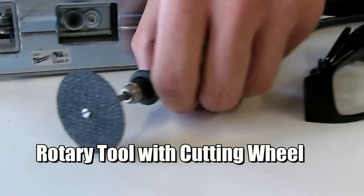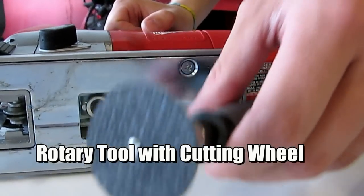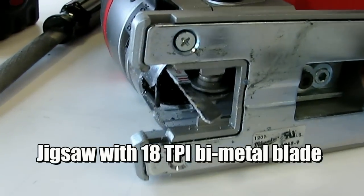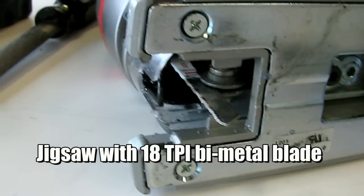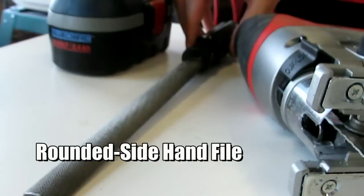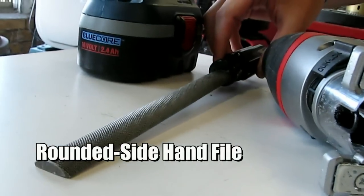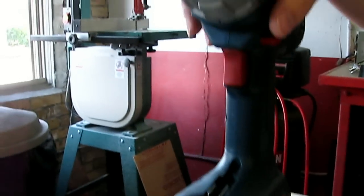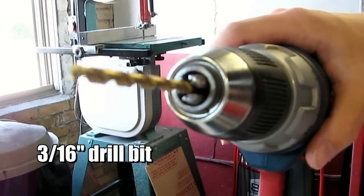then we've got our rotary tool with cutting wheel, jigsaw with 18 TPI bi-metal cutting blade, our rounded side hand file here, and our drill with 3/16 inch bit.